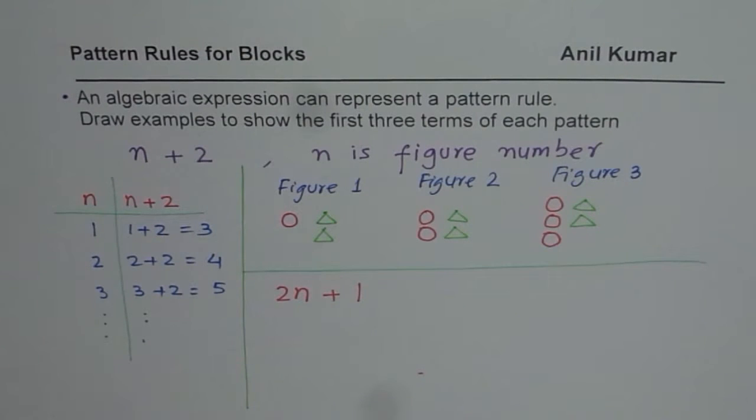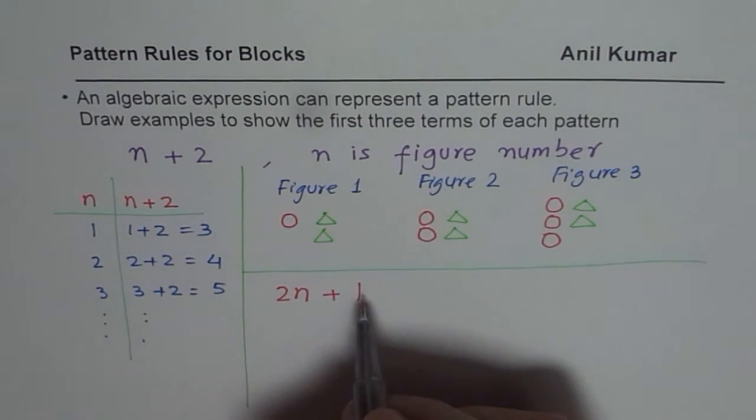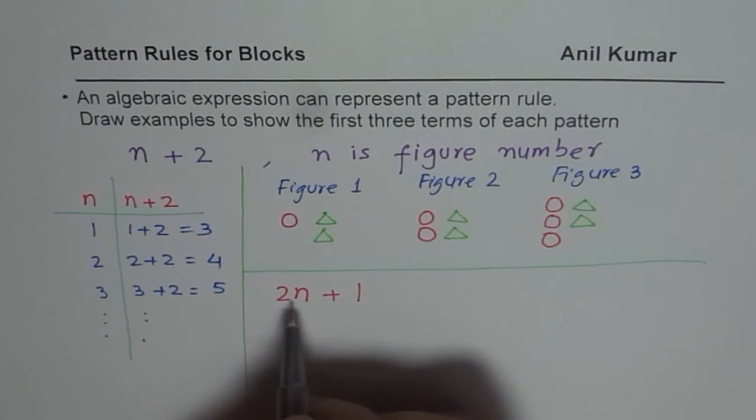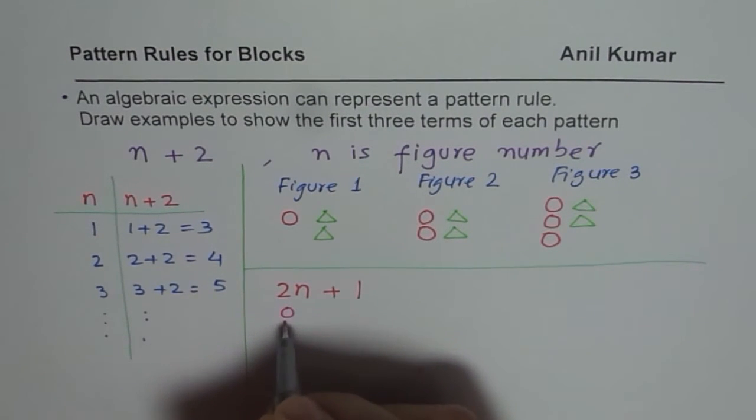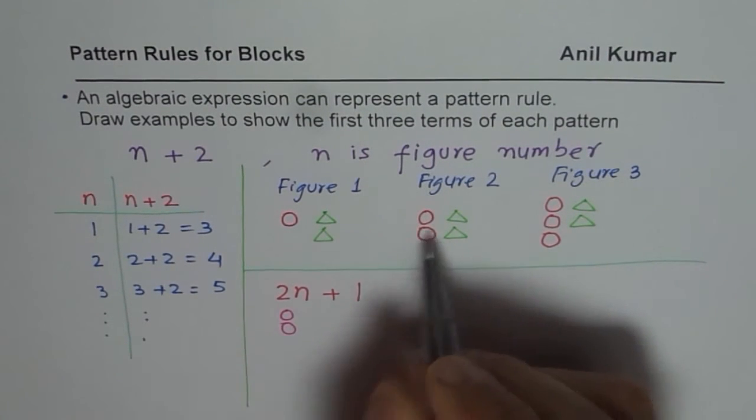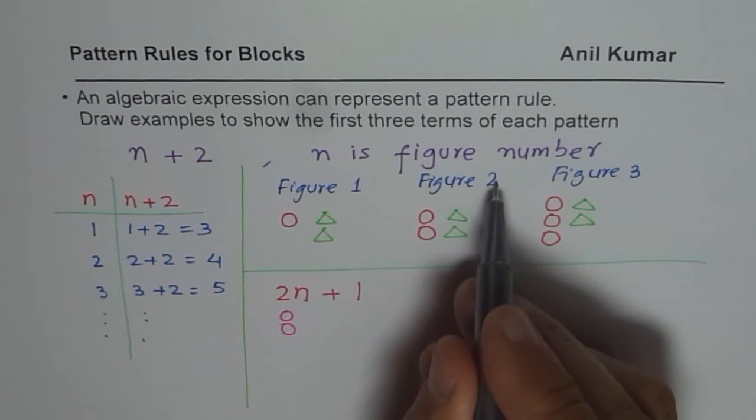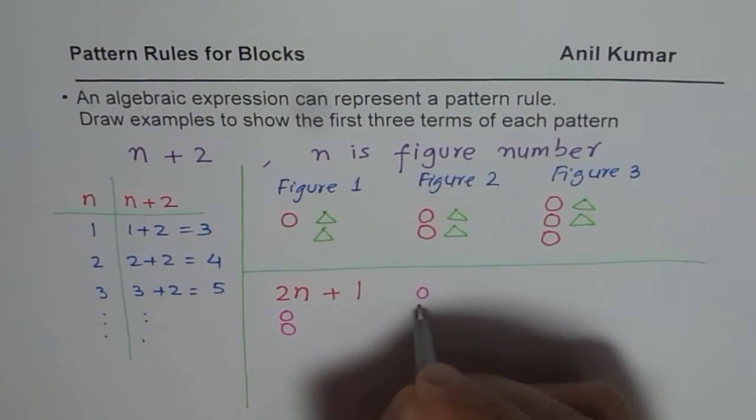So as we did last time, what we will do here is we will make the things which are changing 2 times n. Figure number is 1, 2 times 1 is 2. So I need 2 figures here. Let me this time make 2 circles. 2 times 2 is 4. So I will make 4 circles here. These are changing, correct?